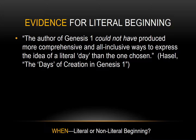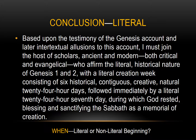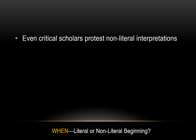Gerhard Hasel, in his article 'The Days of Creation in Genesis 1,' says: 'The author of Genesis 1 could not have produced more comprehensive and all-inclusive ways to express the idea of a literal day than the one chosen.' The author concludes that Genesis 1 and 2 describe a literal creation week consisting of six historical, contiguous, creative, natural 24-hour days. As many evangelical scholars have moved away from a literal interpretation, critical scholars who do not even believe in the authority of Genesis themselves protest this misinterpretation. Critical scholar James Barr states that no professor of Hebrew or Old Testament at any world-class university believes the writer intended anything other than six 24-hour days. One commentary suggests it is not the text but the demands of harmonizing with modern science that cause people to think otherwise.